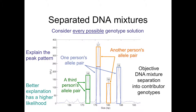This is how TrueAllele separates out a DNA mixture. It begins with the data and does not touch it — there is no thresholding, no changing of the data. That pattern with a low 16, a high 17, a lower 18, and a medium 19 shown in blue is unchanged. What does change is the computer tries to explain this quantitative peak height pattern by proposing many different genotypes. For example, in one snapshot, a 17-19 shown in blue as one person's allele pair; in orange, another person's allele pair of 17 and 18; and in green, a third homozygote individual with a 16-16.